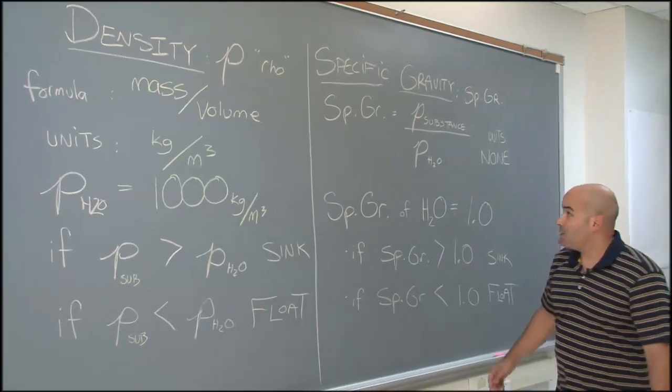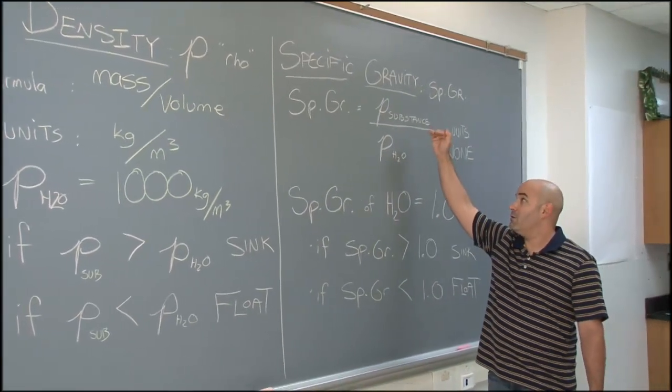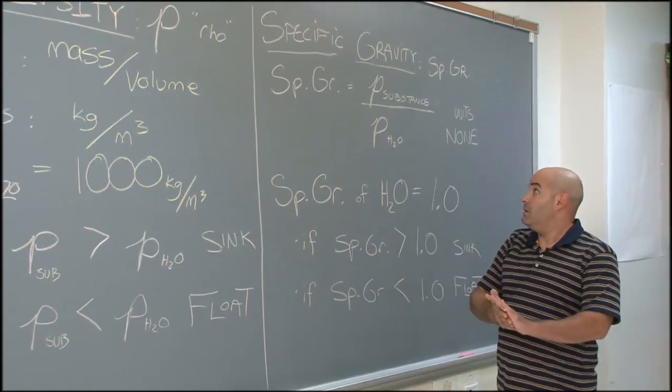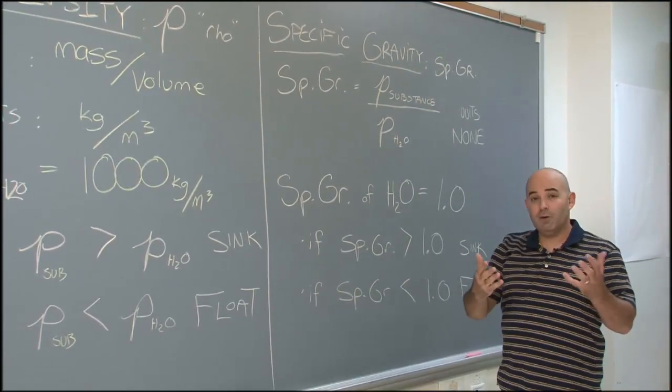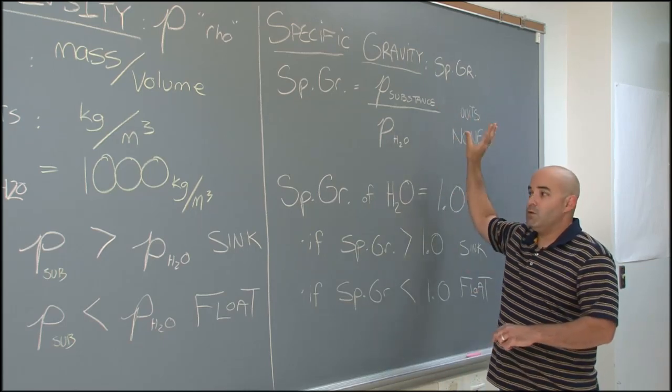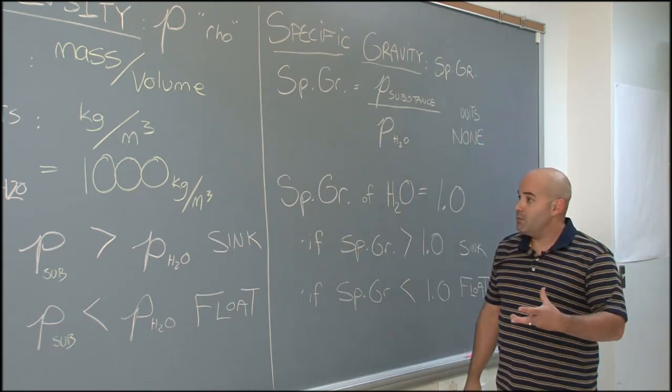Let's talk about specific gravity. Specific gravity is just a way to compare the density of one thing to the density of water. That's our formula. There are no units. The density divided by the density leaves you with no units left over, so it's just gonna be a number.